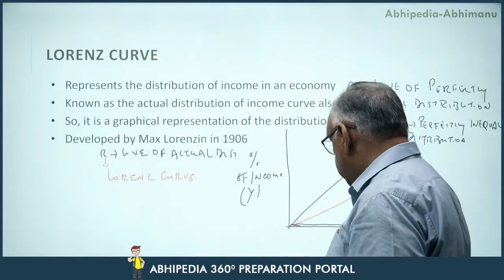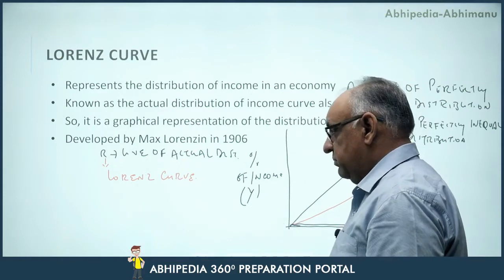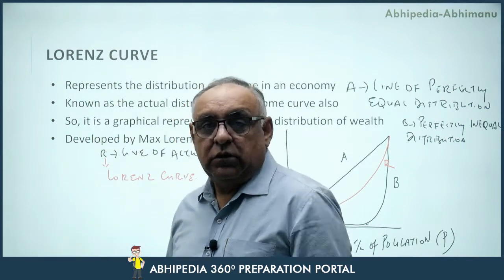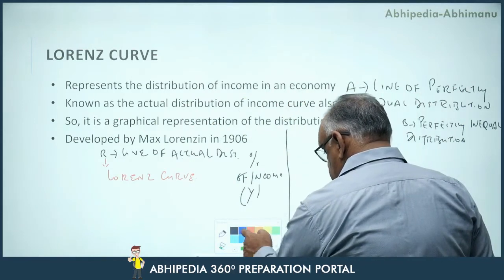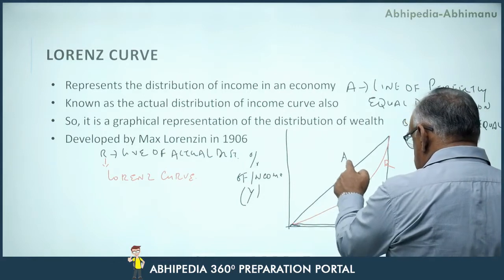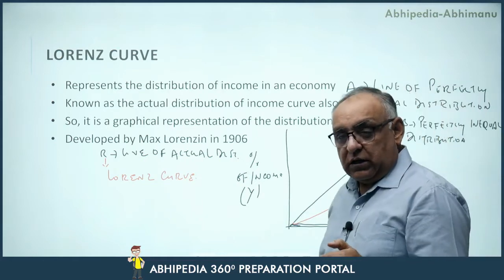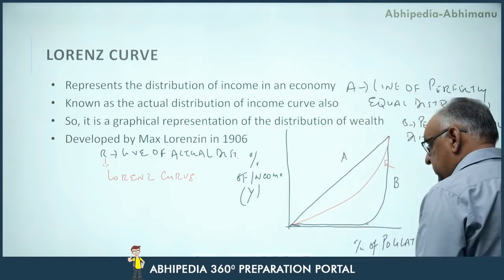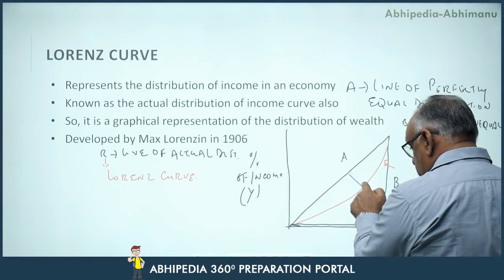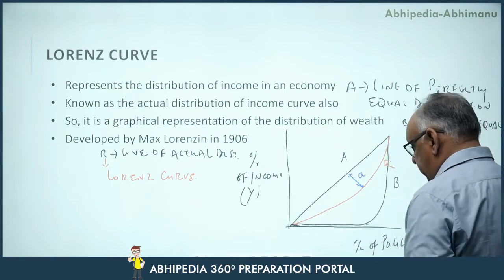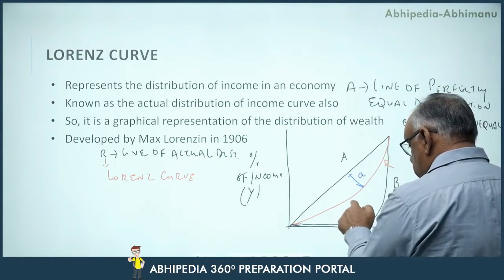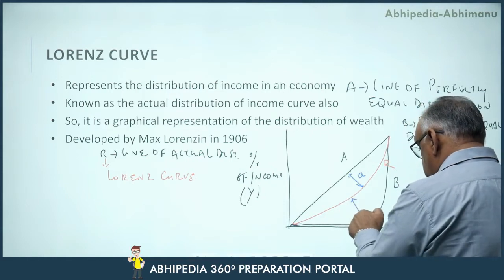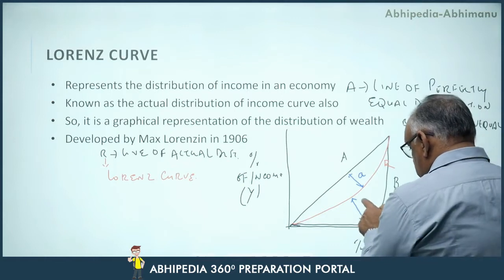Now let us discuss the Gini Coefficient. The Gini Coefficient is also basically based on the Lorenz Curve. Let us consider the gap between curve A (line of perfectly equal distribution) and curve R (line of actual distribution, i.e., the Lorenz Curve) — let us call this area 'small a'. And the gap between the line of actual distribution and the line of perfectly unequal distribution — let us call this area 'small b'.